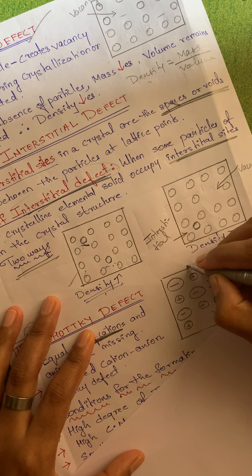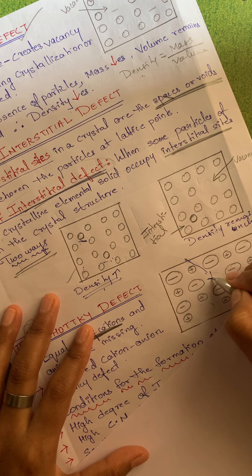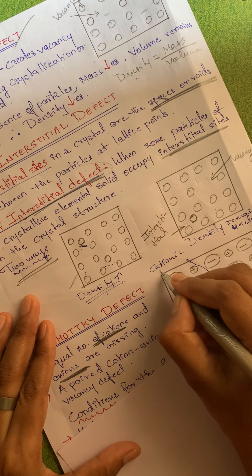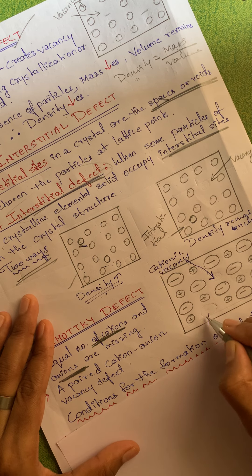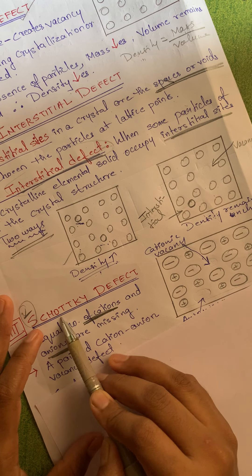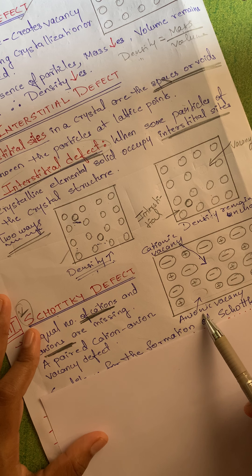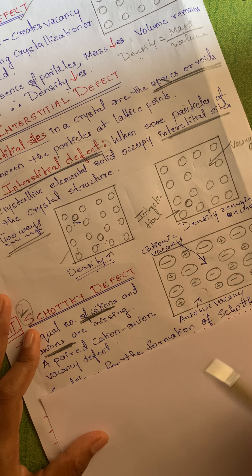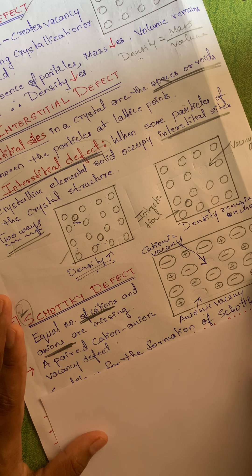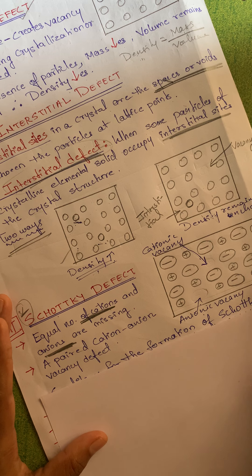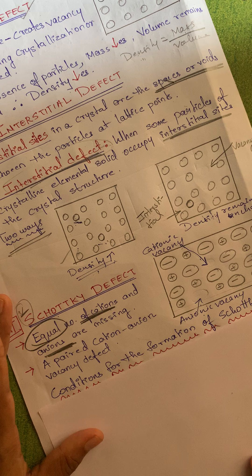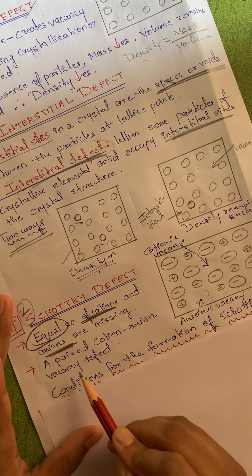Schottky defect and Frenkel defect are particularly seen in ionic compounds. In Schottky defect, equal numbers of cations and anions are missing. For example, one cation is missing from its position and one anion is also missing, creating a cationic vacancy and an anionic vacancy.